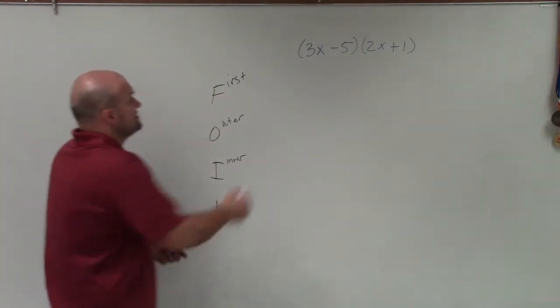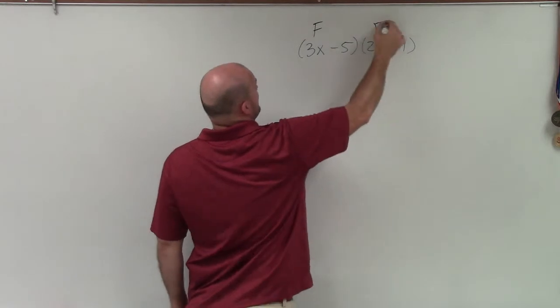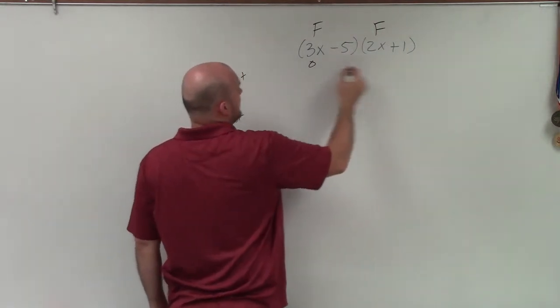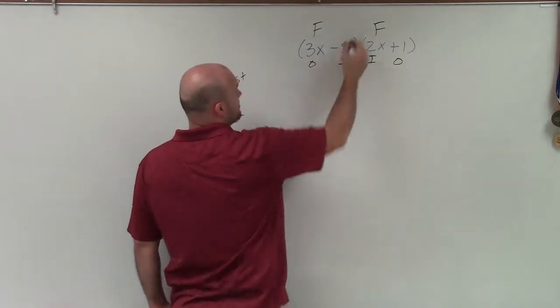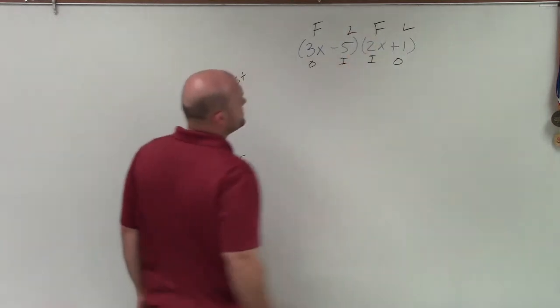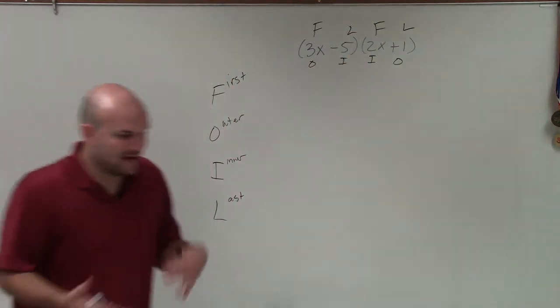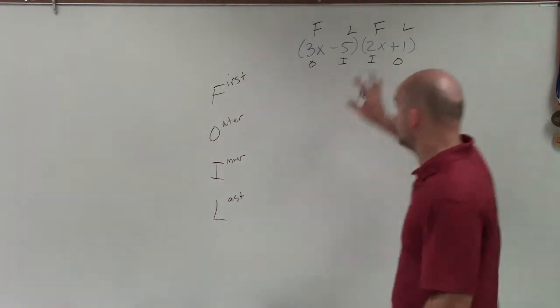So what that means is the first two terms of each binomial, the outer terms of the two binomials, the inner terms of the binomials, and the last two terms of each binomial. So when I'm doing FOIL, I like to label them, just like how I did here.